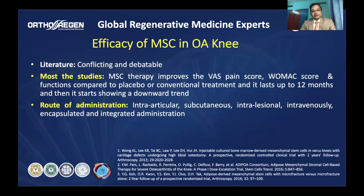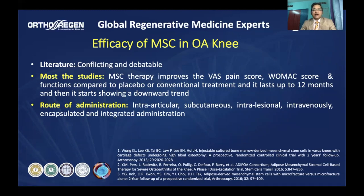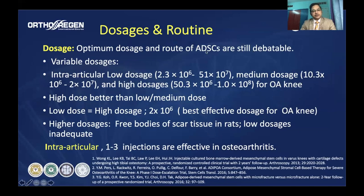Analyzing the published literature, results are conflicting and debatable, but there is general consensus that stem cells improve symptoms, pain, quality of life, and scores compared to placebo or conventional treatment. This improvement typically lasts one year, with some studies showing two, three, or even four years, though after one year it generally shows a downward trend. The most common route of administration has been intra-articular, with some using intra-lesional or encapsulated integrated administration.